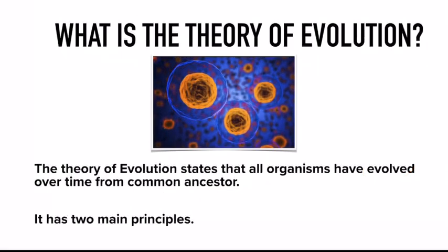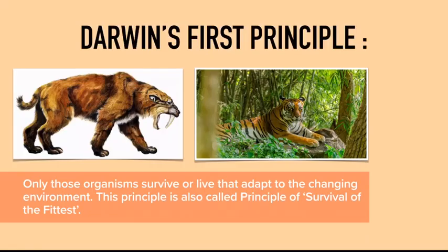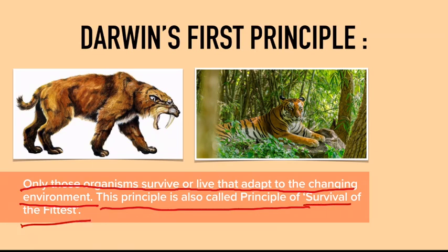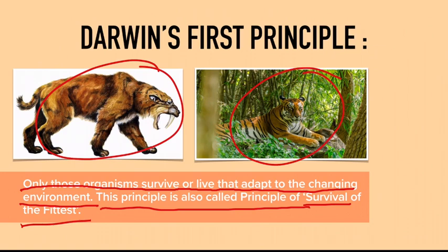Now let's quickly look at the two main principles of the theory of evolution. Darwin's first principle says that only those organisms survive that adapt to the changing environment. This principle is also called the principle of survival of the fittest. As you can see in the picture, on your left is a saber-tooth tiger and on the right is a modern tiger. The saber-tooth tiger was very big in size and had no stripes.